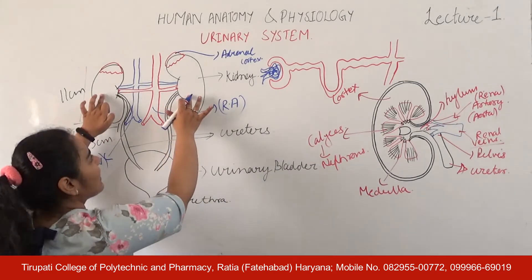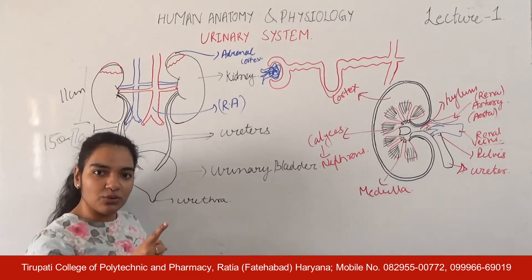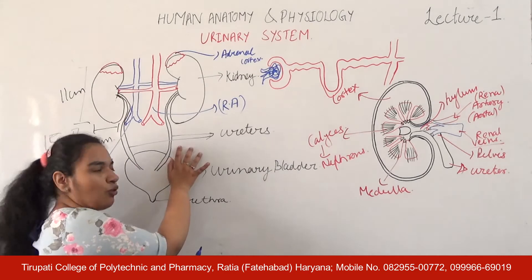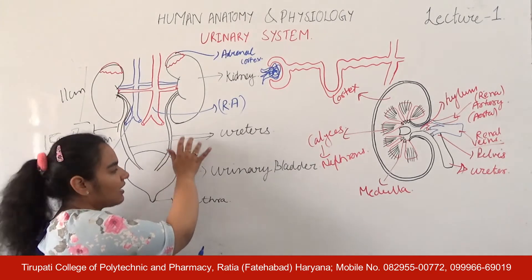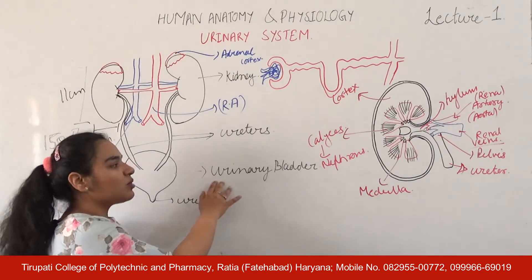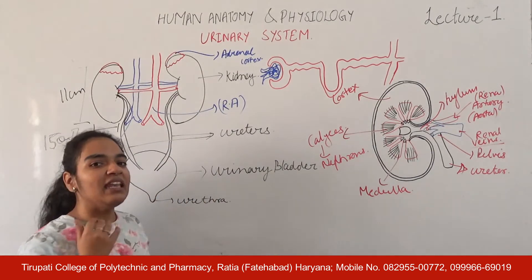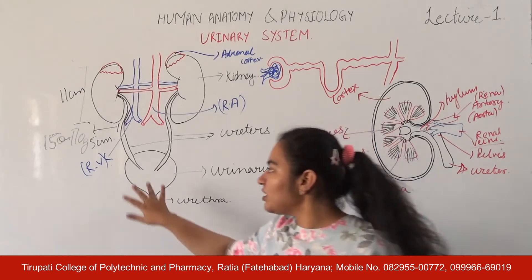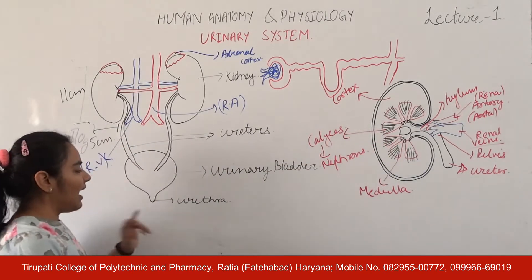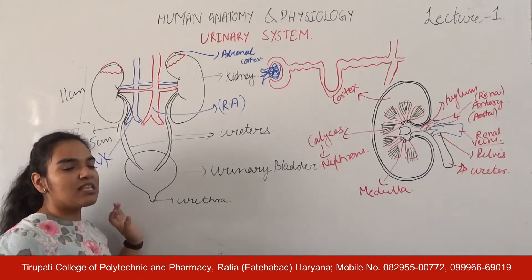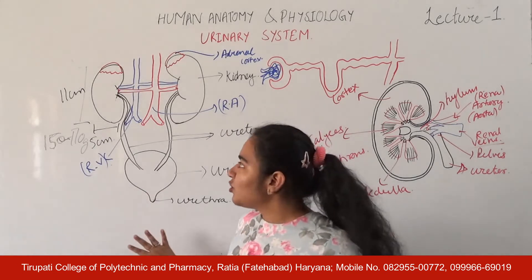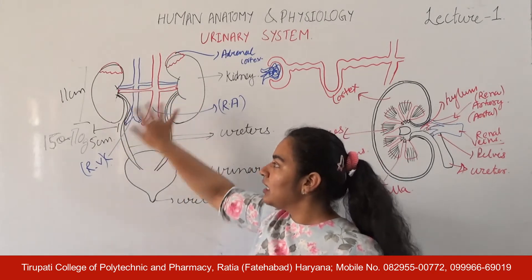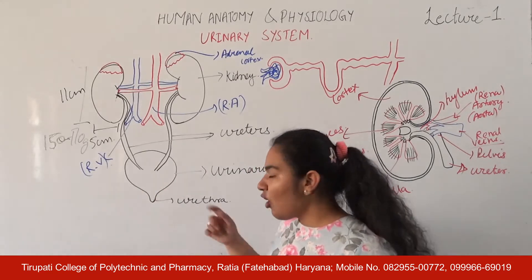Our urinary system has two kidneys. We have two ureters — each kidney has one ureter. These two ureters carry our urine. We have a urinary bladder, which acts as a reservoir. When we don't excrete urine, it is stored in the urinary bladder. So the major organs of the urinary system are: two kidneys, two ureters, one urinary bladder, and one urethra.